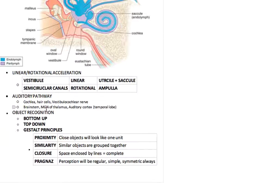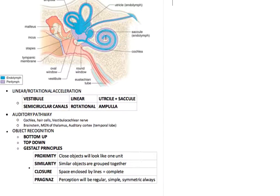Auditory pathway. Cochlea, hair cells, vestibulocochlear nerves, and then vestibulocochlear nerve, brainstem, MGN, and auditory cortex. The way to remember MGN is M is for music, so auditory.